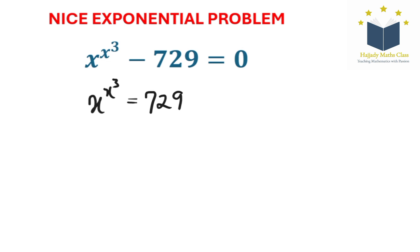Then the next step is going to be cube both sides. Then here I'm going to have this to the power of 3 equal 729 to the power of 3.